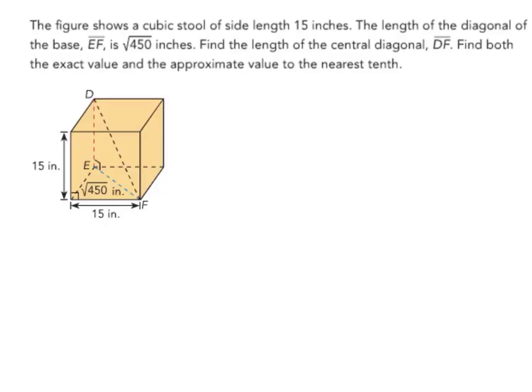The figure shows a cubic stool of side length 15 inches. The length of the diagonal of the base, EF, is √450 inches. Find the length of the central diagonal, DF. Find both the exact value and the approximate value to the nearest tenth.